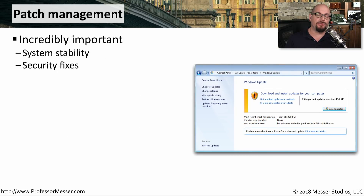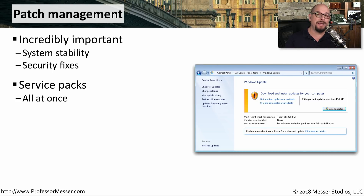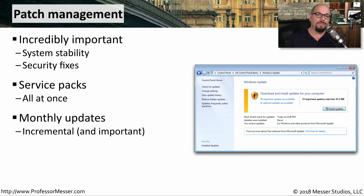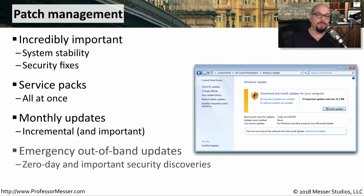Although many infrastructure devices have their own operating systems, you probably still have management workstations and SIEMs running Windows, Linux, or other common operating systems. For those, we want to be sure to provide all of the latest patches, which will keep your system more stable and provide security patches for known vulnerabilities. In Windows, for example, you can get a service pack that updates a large number of patches at once, and you want to keep up with the monthly updates Microsoft provides. Sometimes security patches are released outside of that normal monthly cycle — these out-of-band updates are usually very important security issues, so make sure you're on the notification list to be aware whenever they are made available.